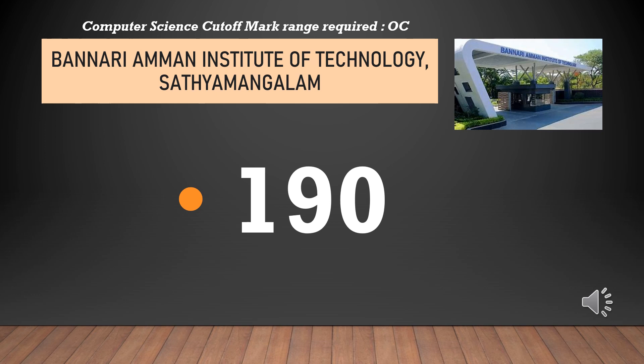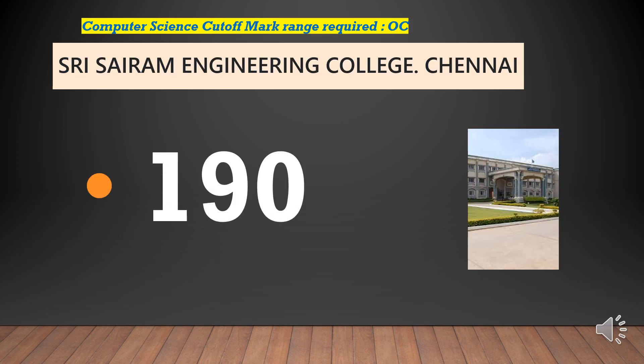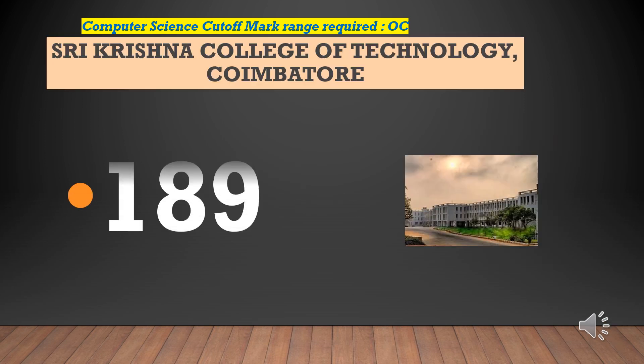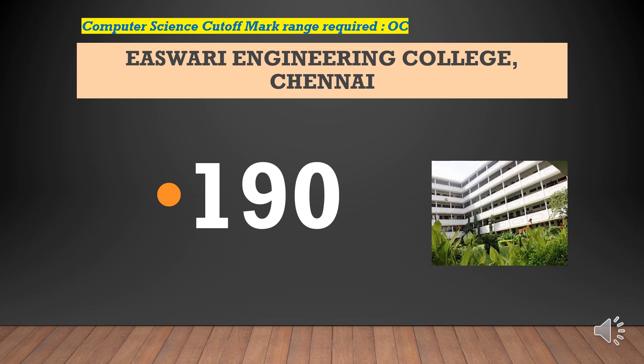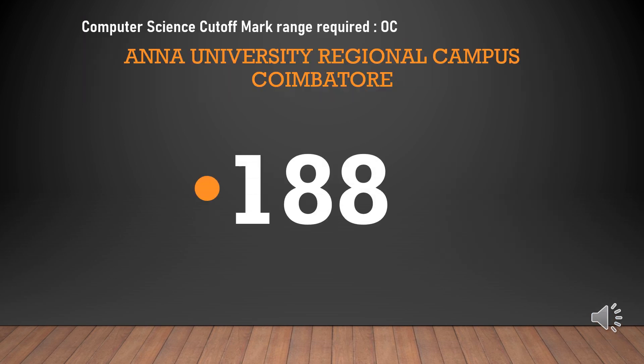Bannari Amman Institute of Technology — cut-off required for CSEOC is 190. Shri Sairam Engineering College — cut-off required for CSEOC is 190. Shri Krishna College of Technology — cut-off required for CSEOC is 189. Government College of Engineering Thirunelveli — cut-off required for CSEOC is 192. Iswari Engineering College — cut-off required for CSEOC is 190.